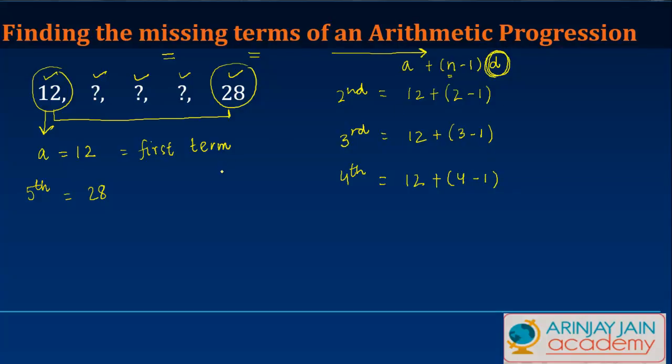So how do I find this out? The answer is simple. For the fifth term the value is given to you as 28, but this 28 should be equal to a plus (n-1) times d. In other words, a is 12 plus n is 5, 5 minus 1, 4 times d should be equal to 28.